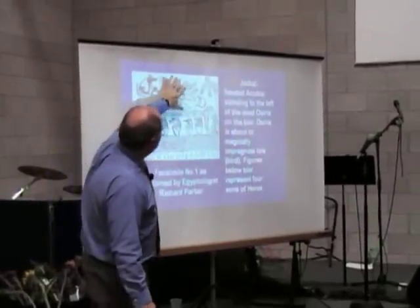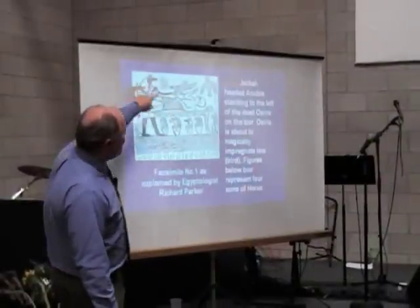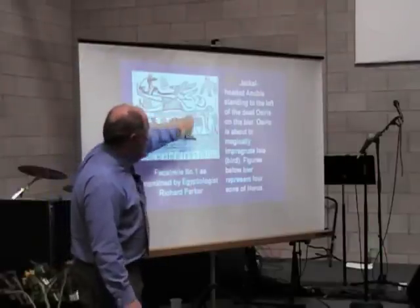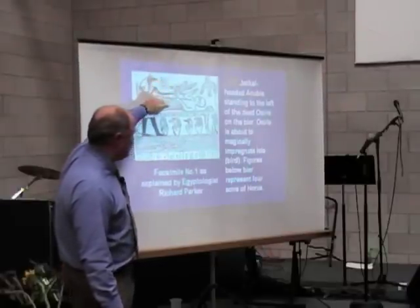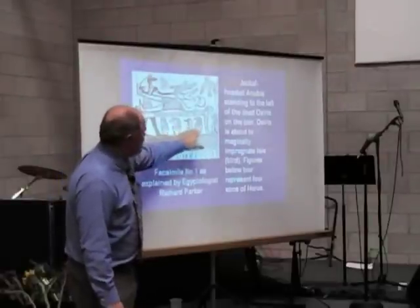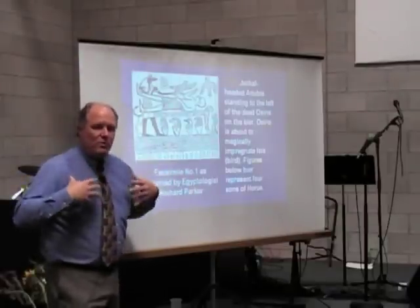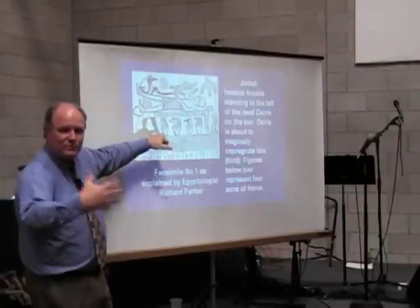We also have something missing here. Remember, that part of the parchment was gone — and I want you to look very carefully at the midsection of this gentleman. You can wonder why Joseph Smith probably got that one wrong. But anyway, here's what we have according to an Egyptologist: the jackal-headed Anubis standing left to the dead Osiris — not Abraham — who is on this bier. Osiris is about to magically impregnate Isis, which is the bird above him. And the figures below the bier represent the four sons of Horus, in the shape of what we know as canopic jars.